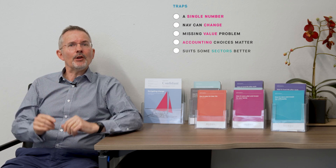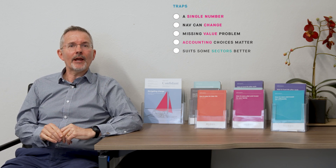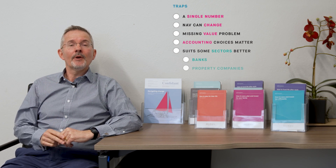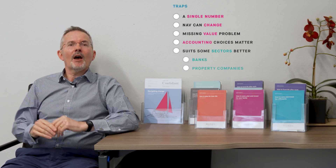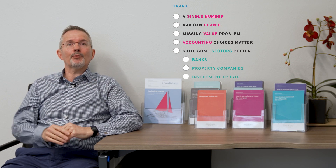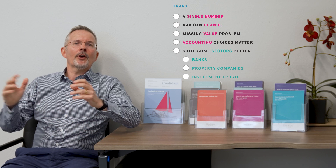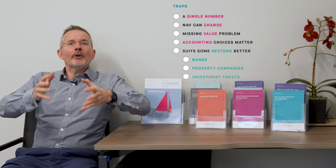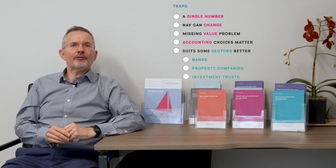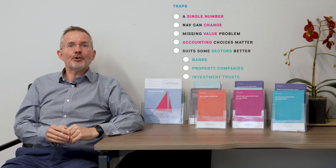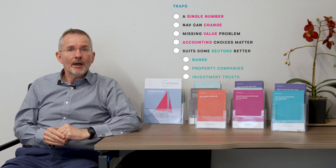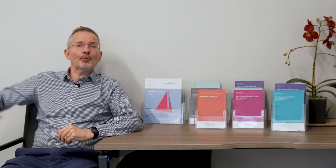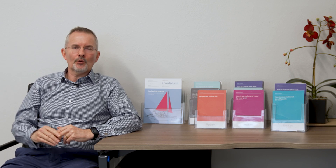Prime candidates where you might compare businesses using the price-to-book ratio include banks — they have quite a big book of financial assets — property companies, which definitely have a big book of assets, and potentially investment trust companies. There, the price-to-book ratio can be quite useful. But where asset values are not a driver of business growth, you've got to be quite careful relying too heavily on it. And finding low price-to-book ratios when the market is punchy can also be quite tricky.